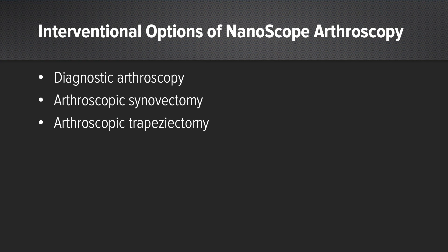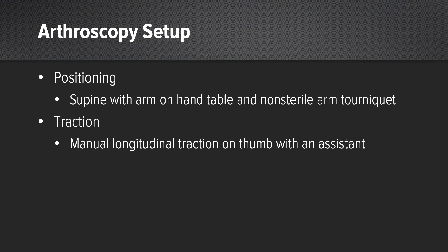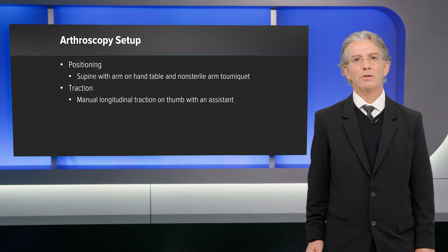The arthroscopic setup includes positioning the patient in the supine position using a hand table and a non-sterile arm tourniquet. Traction can be placed longitudinally on the thumb to gain access to the CMC joint.